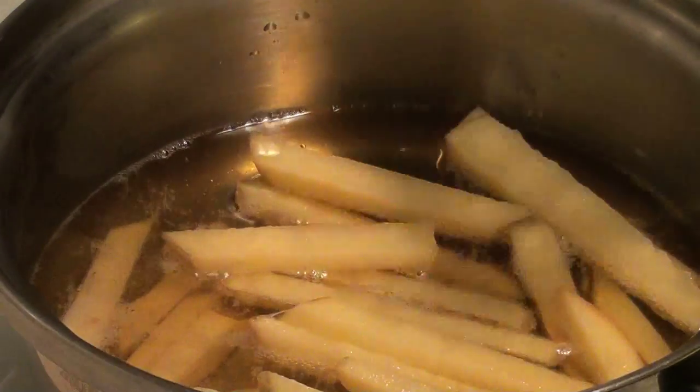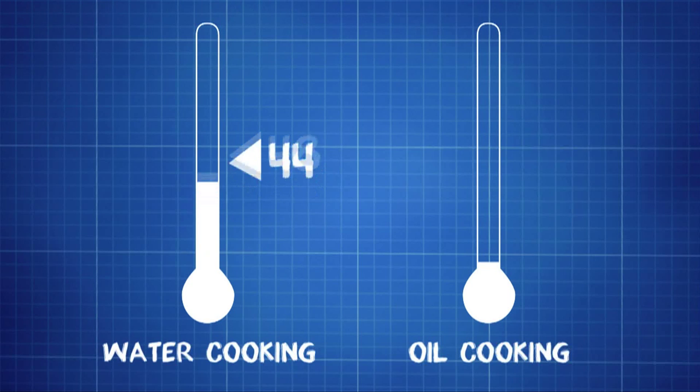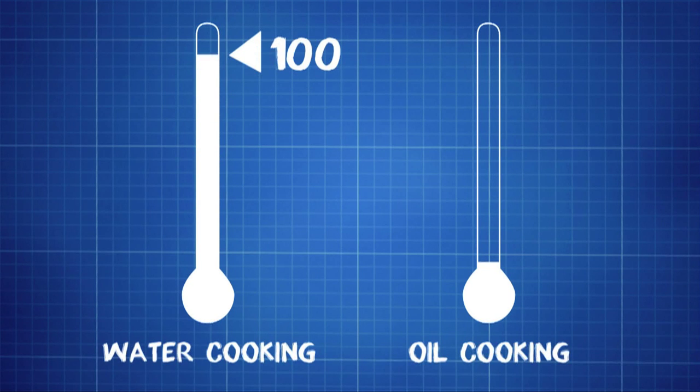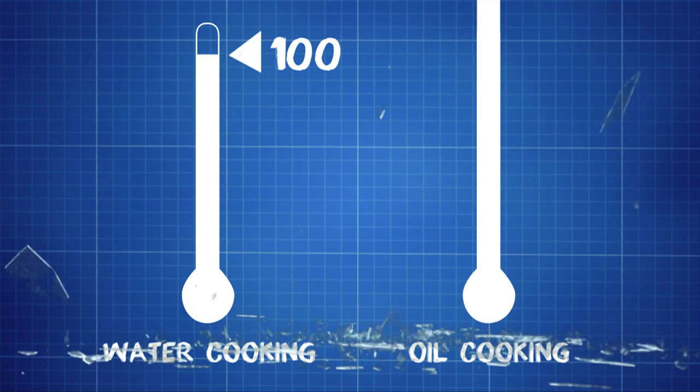First, we need to define what is deep-frying. Deep-frying potato basically means submerging potato into hot oil. Traditional water-related cooking methods can only get up to 100 degrees Celsius. However, as oil's boiling point is a lot higher than water, cooking temperature can get way higher than 100 degrees.